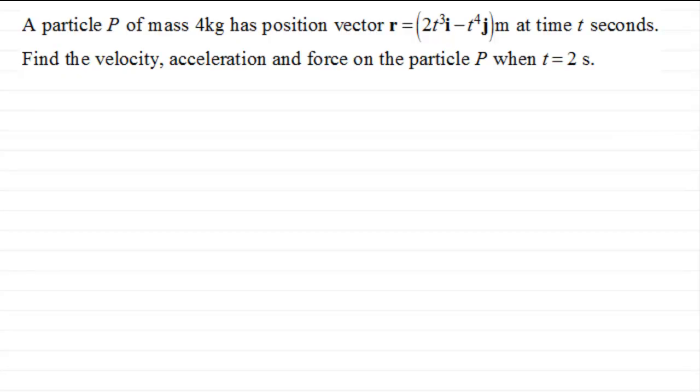So, as I said in the previous video, to get the velocity vector v, what we need to do is differentiate the position vector with respect to time. The velocity vector is the rate of change of the position vector.